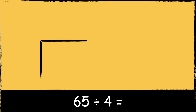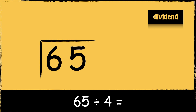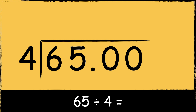First we need to draw our bus stop. We put the number that we are dividing — the dividend — inside the bus stop, and we put the number that we're dividing it by — the divisor — next to the bus stop. To handle the remainder and get an exact answer, we place a decimal point and some zeros after the divisor. This will allow us to continue dividing for a decimal answer.